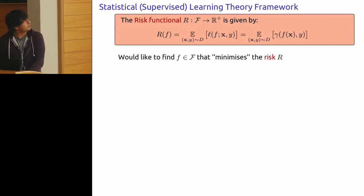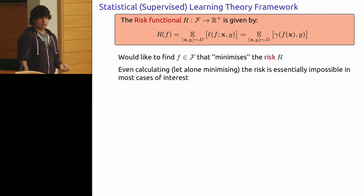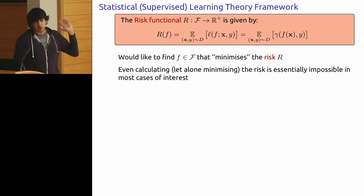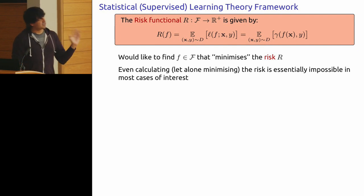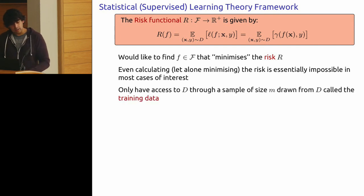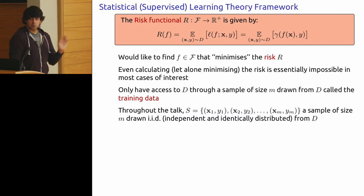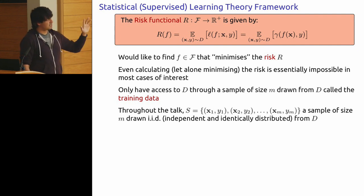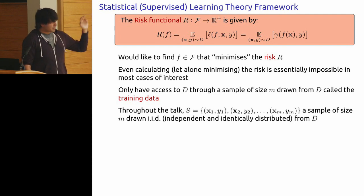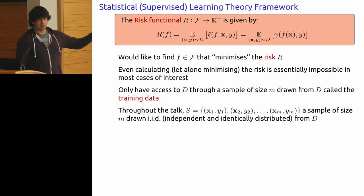We would like to find a function that minimizes the risk. The trouble is that even calculating the risk is basically impossible on most interesting problems — we don't have access to the distribution, and it can be arbitrarily complex. The only access we have to this distribution is through samples drawn from it. Throughout this talk, I'll think of a sample S of size M drawn IID from distribution D. This is a simplifying assumption for data in practice, but it is what we use to develop theory.